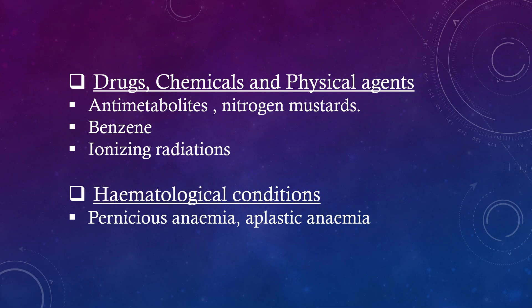Drugs, chemicals, and physical agents like anti-metabolites, nitrogen mustards, benzene, and ionizing radiations. Hematological conditions include pernicious anemia and aplastic anemia.